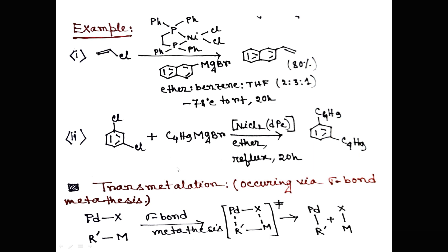Before going to the mechanistic part, we must understand transmetallation. Transmetallation is a reaction where the exchange of ligands occurs between metals, proceeding via the sigma bond metathesis pathway. We take one palladium-X complex and another R′-M complex, where M may be any metal. The reaction goes through a four-membered ring transition state. The X ligand attached to palladium is exchanged with metal M, and the R′ ligand attached to M is exchanged with palladium, giving palladium-R′ and M-X.